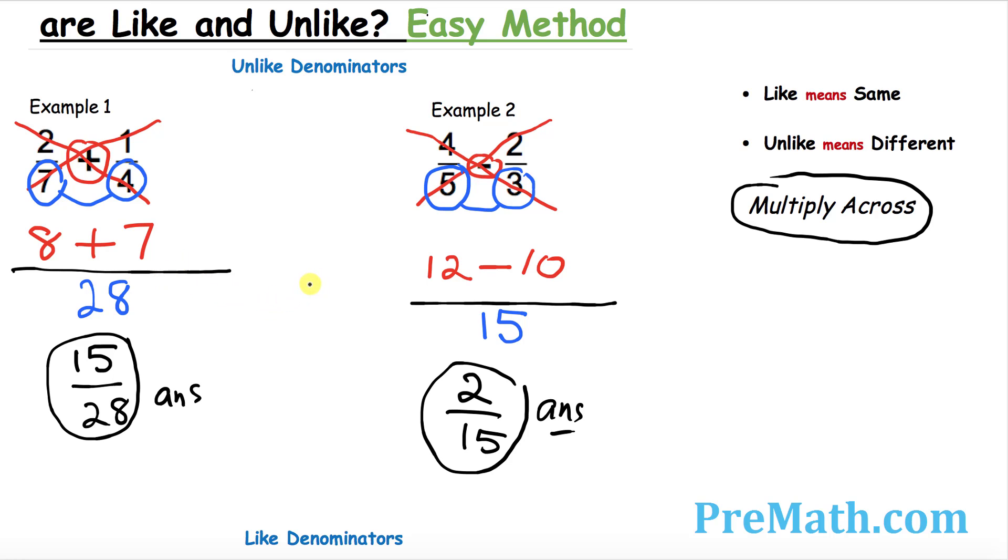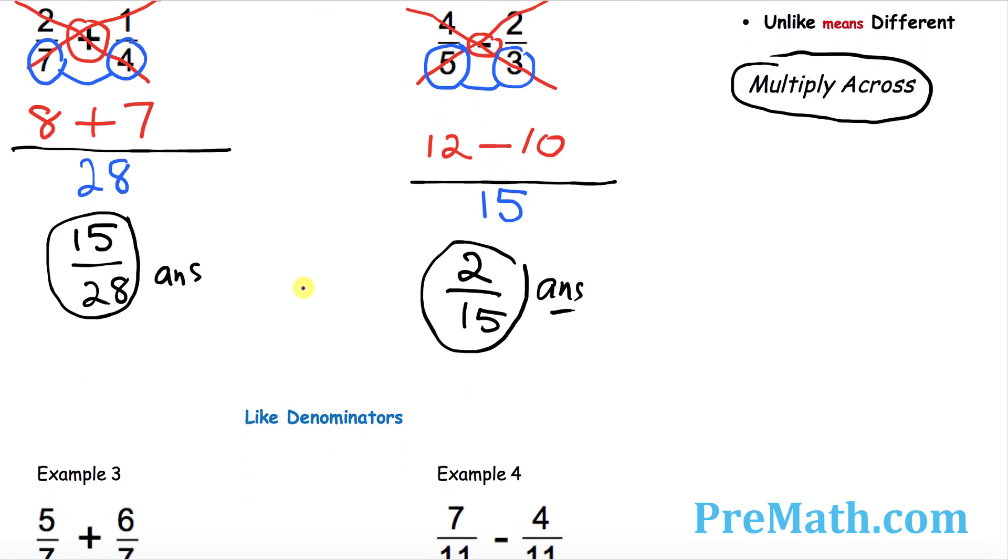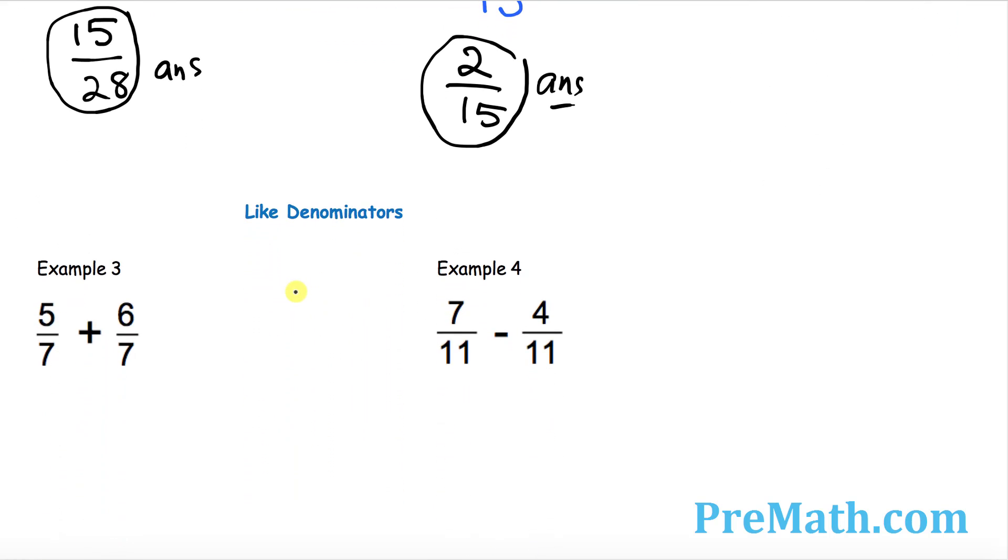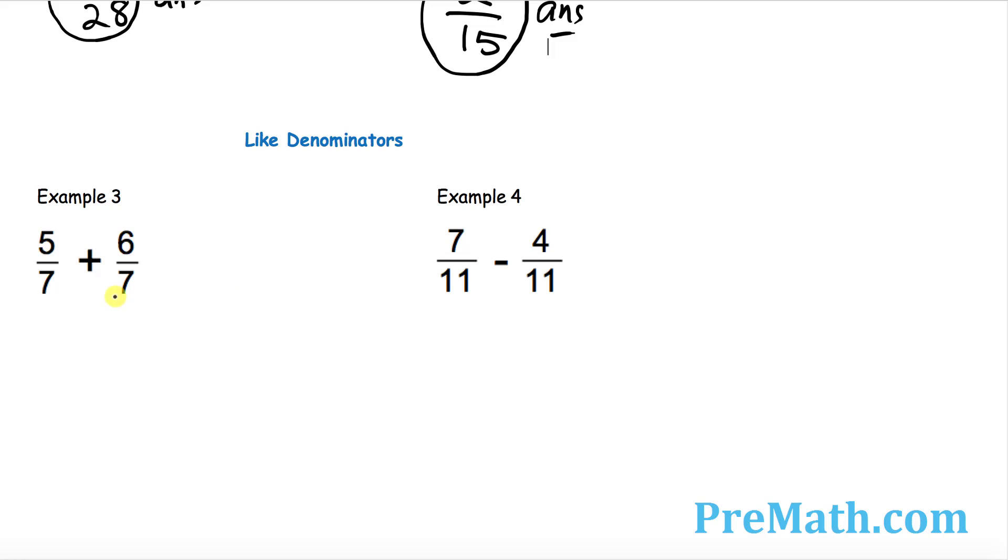See how simple this method is? You just simply multiply them across and just do the simple steps and you're going to get your answer. The next two examples that we're going to be doing have like denominators - they have same denominators, and I'm sure you know how to do those. Those are pretty easy to do. Once again, the very first thing I want you to do is draw a big long fraction bar.